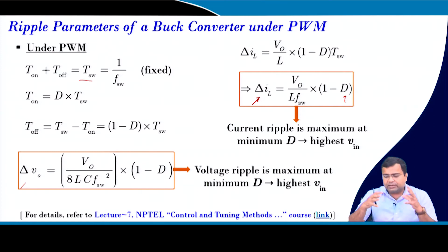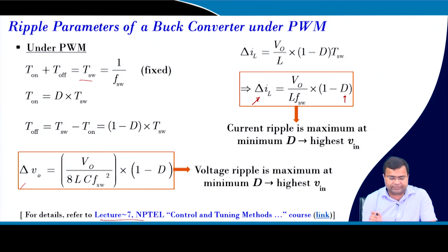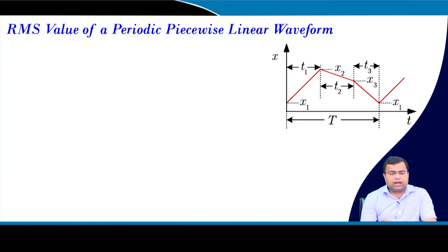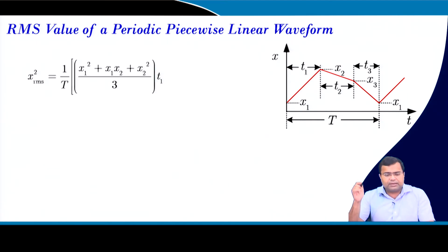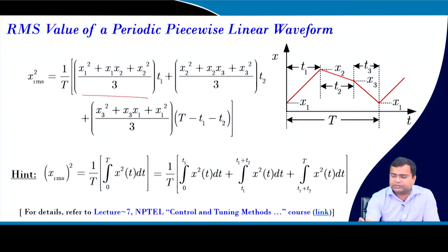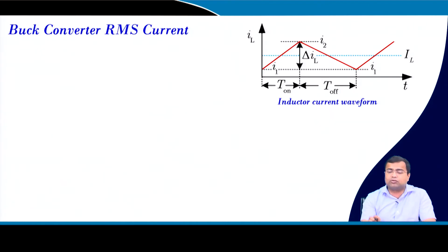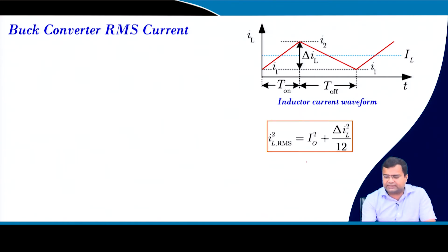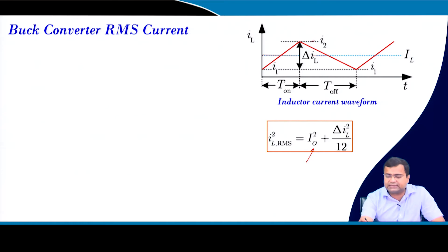Both worst-case conditions occur at the highest input voltage, where current and voltage ripple are maximum — as discussed in lecture 7. For a piecewise linear waveform, the RMS value can be derived by integration. It can be shown that the RMS inductor current equals the square root of the load current squared plus ΔiL²/12, where ΔiL is the ripple current.